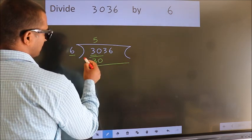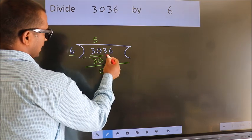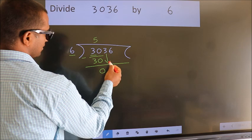Now, we should subtract. We get 0. After this, bring down the beside number. So, 3 down.